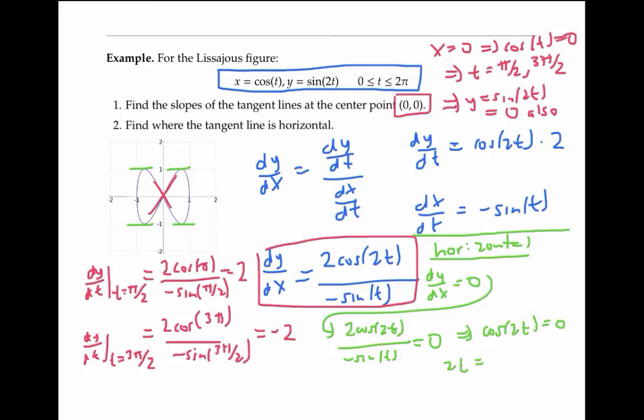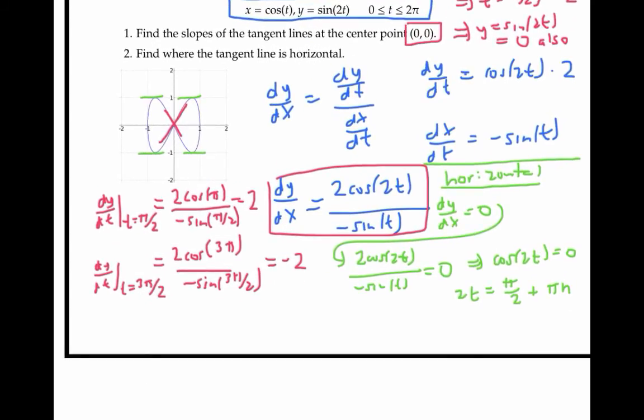So 2t = π/2 + nπ for some integer n. Solving for t, we get that t = π/4 + nπ/2. There are indeed four such values of t in the interval from 0 to 2π.